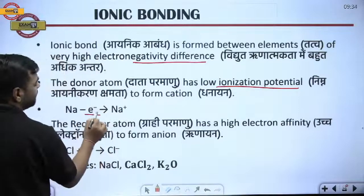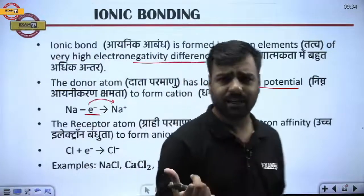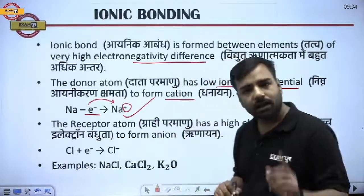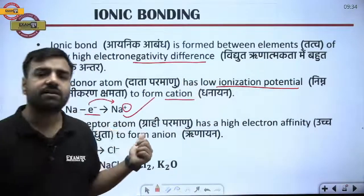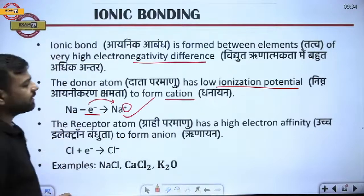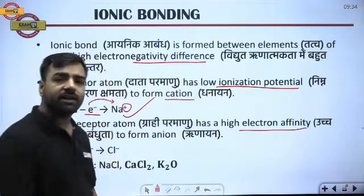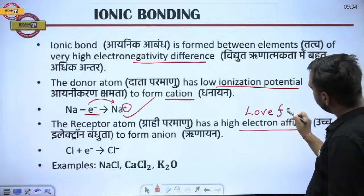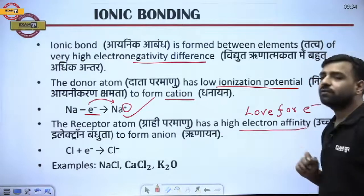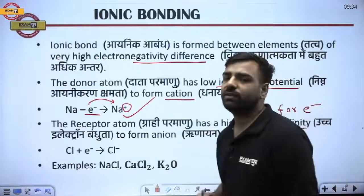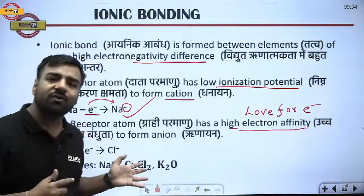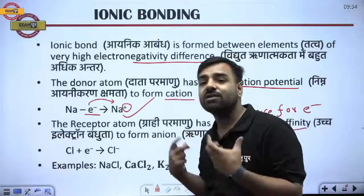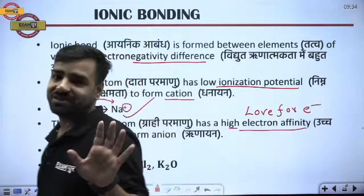Electronegativity is the tendency of gaining electrons. When we move from left to right in the periodic table, electronegativity increases. Electropositivity is the opposite. The 18th group — noble gases — neither require nor give electrons; they are inert. The donor atom has low ionization potential, meaning its electron is easily removed, forming a cation. The acceptor atom has high electron affinity — high love for electrons — forming an anion. Chlorine has high electron affinity; sodium does not.